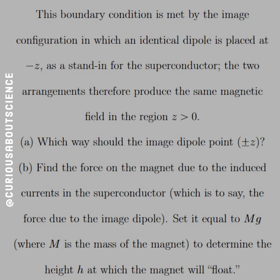Now, this boundary condition is met by the image configuration in which an identical dipole is placed at negative z as a stand-in for the superconductor. When we're dealing with image problems, they have to be 0 somewhere and they have to be equal and opposite. Let the symmetry stand in there. So what we see here is that the two arrangements therefore produce the same magnetic field in the region z greater than 0.